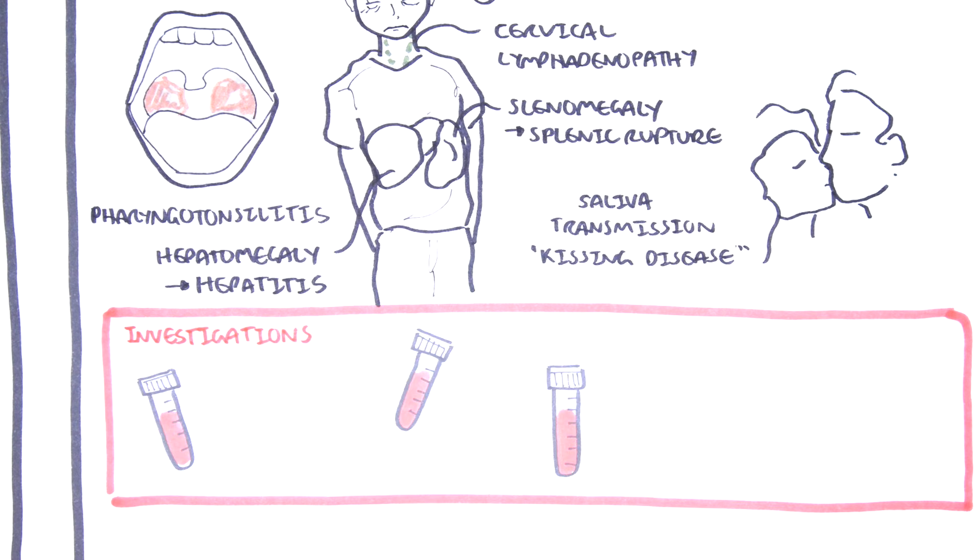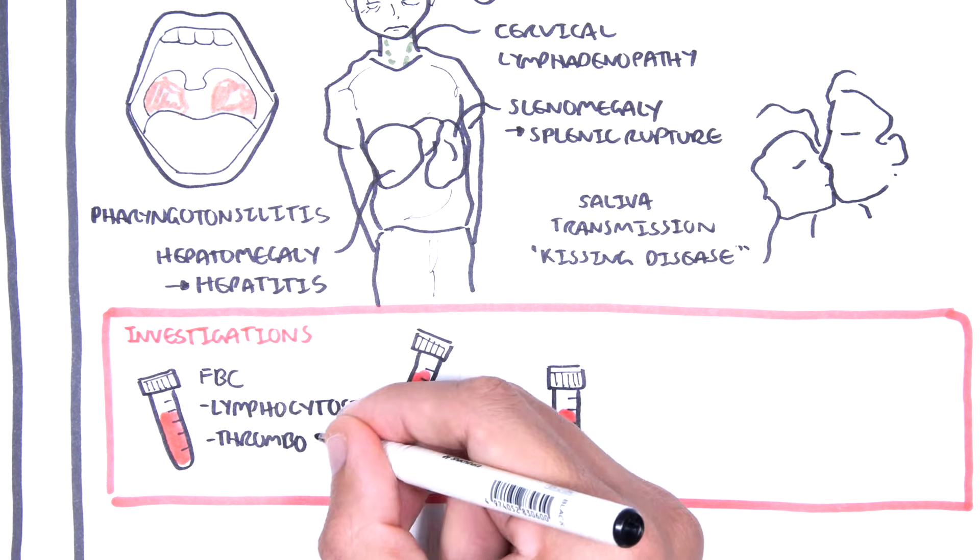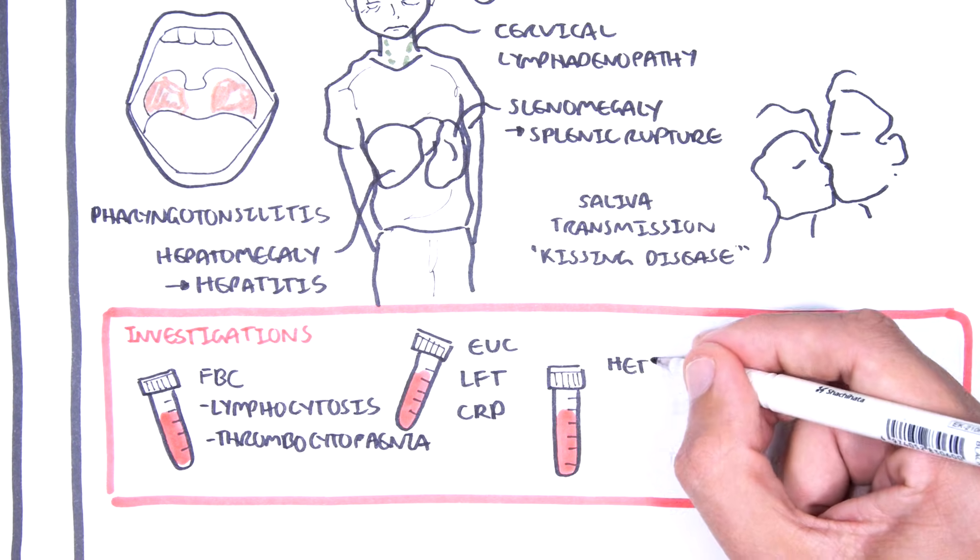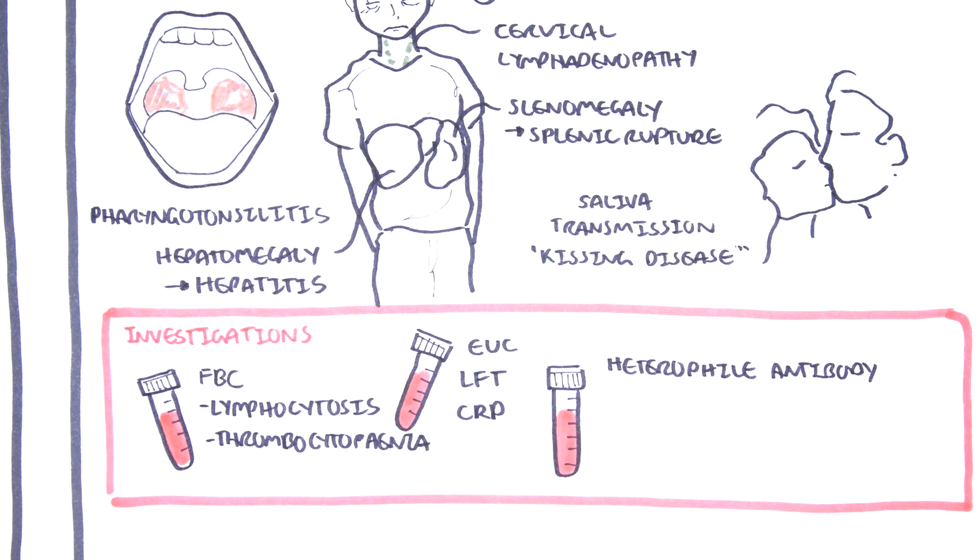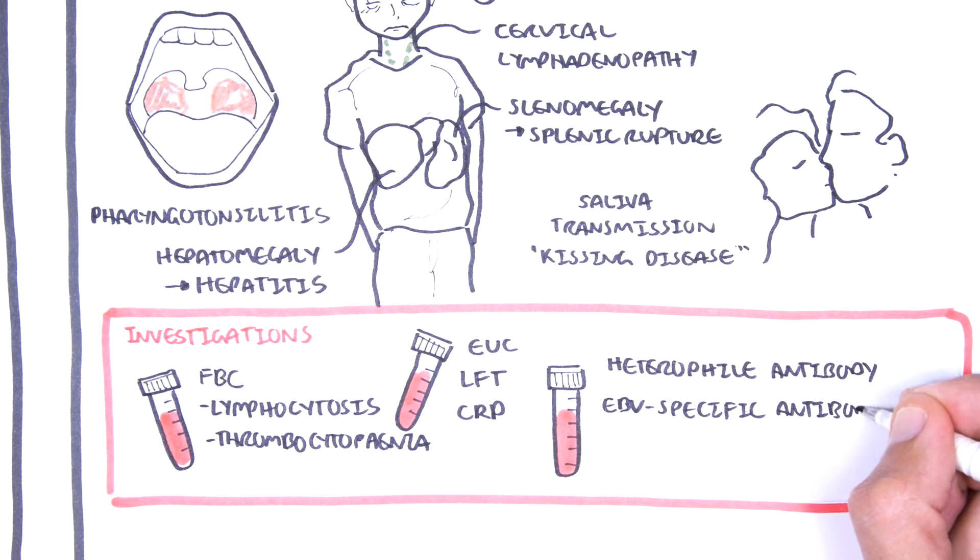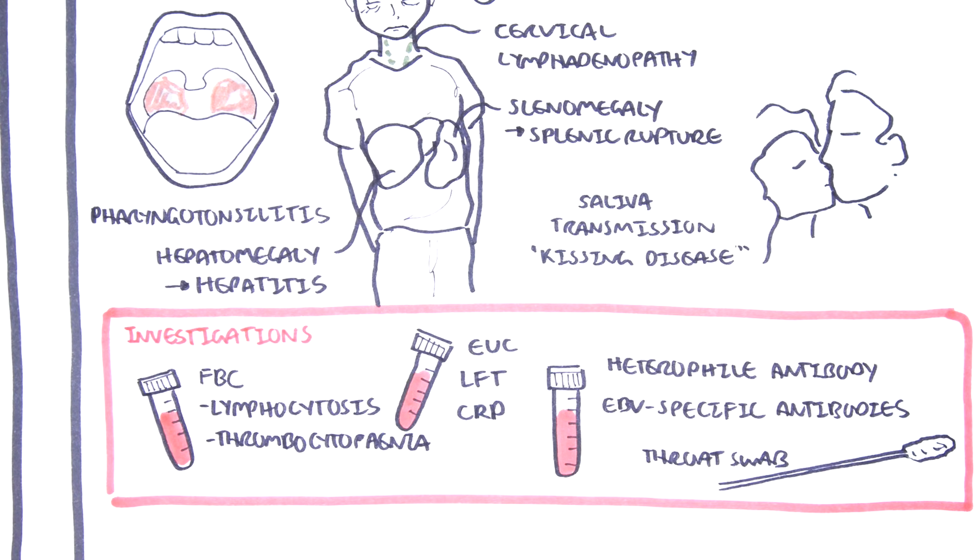Investigations for infectious mononucleosis include a full blood count, which may show lymphocytosis, high lymphocyte count, and thrombocytopenia, low platelets. And then you also want to do electrolytes, urea, creatinine, liver function tests, and CRP. A mono-spot test is a useful test to perform and is very quick. A mono-spot test looks at heterophile antibodies, which are produced by those abnormal B cells infected by the Epstein-Barr virus. Further investigations that can be performed include Epstein-Barr virus-specific antibodies and throat swabs to look for differential diagnosis such as group A streptococcus.